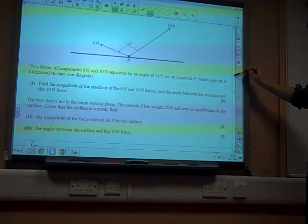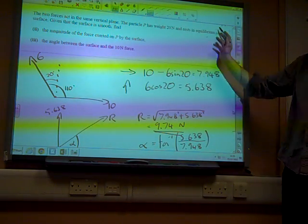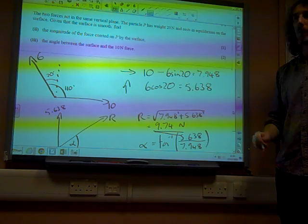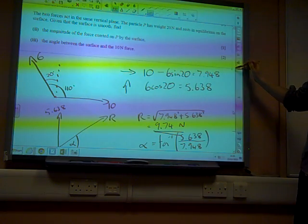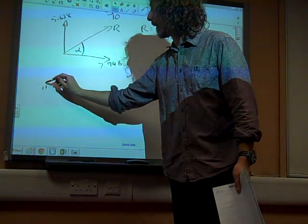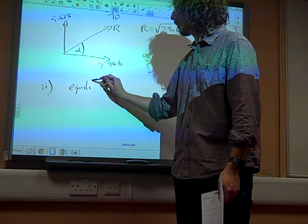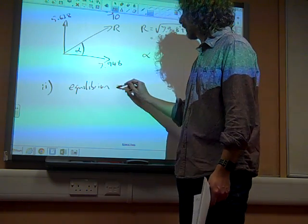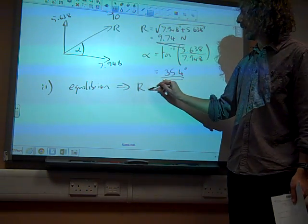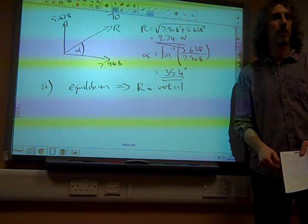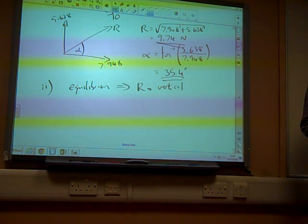So, that kind of just slipped in there, little thing about resting in equilibrium, was a crucial statement. Because in part two, the first thing that we get from that is the equilibrium implies that R is vertical. Okay. That's a really big deal.